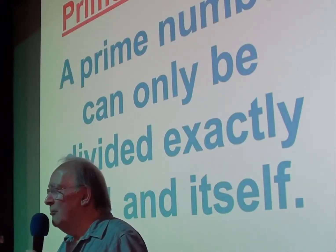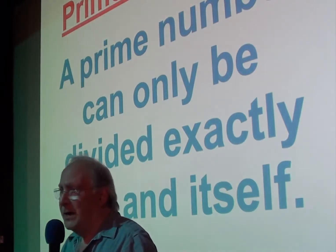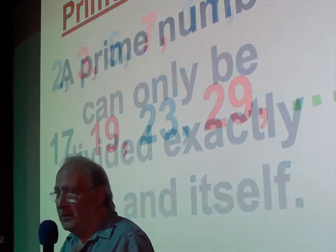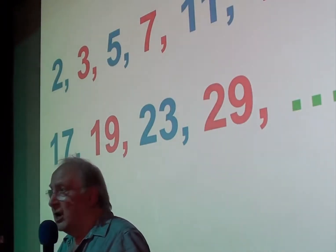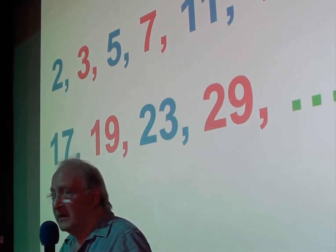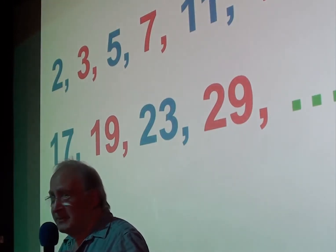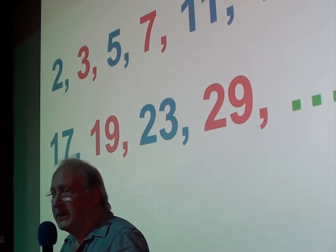Right, using prime numbers. Do you remember what prime numbers are? A prime number can only be divided by one and itself, exactly. These are the first few prime numbers. 2, 3, 5, 7, not 9, 9 could be 3 times 3. 11, 13, not 15, that could be 3 times 5. 17, 19, not 21, that could be 3 times 7. 23, not 25, that could be 5 times 5. Not 27, that could be 3 times 9, 29, etc.